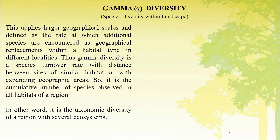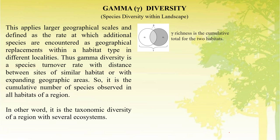Gamma diversity applies at a large geographical scale and is defined as the rate at which additional species are encountered as geographical replacements within a habitat type in different localities. Thus, gamma diversity is a species turnover rate with distance between sites of similar habitat or with expanding geographic area. It is the cumulative number of species observed in all habitats of a region — in other words, the taxonomic diversity of a region with several ecosystems.